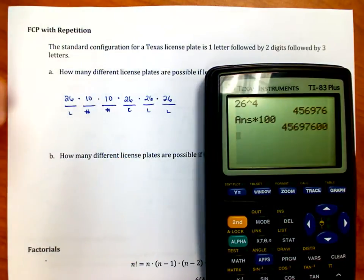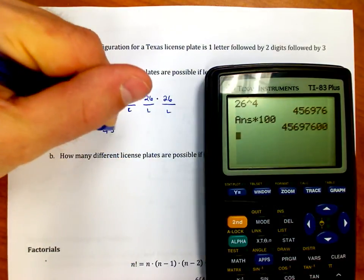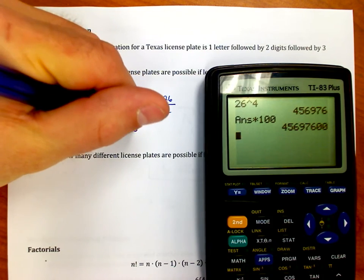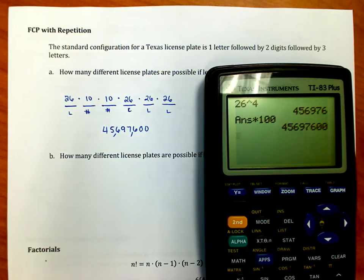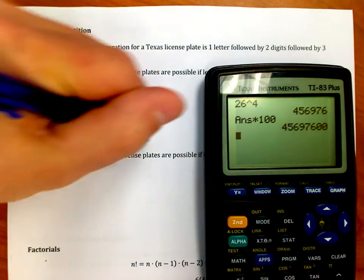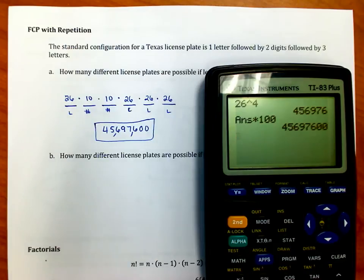I'm going to multiply it times 10 and then times another 10, so I'm just going to multiply by 100. I get 4, 5, 6, 9, 7, 6, 0, 0. So with some commas in there, 45,697,600 choices of license plates. So I can handle up to 45 million drivers or so before I run out of license plates and I got to do something different.